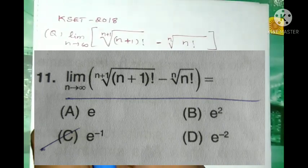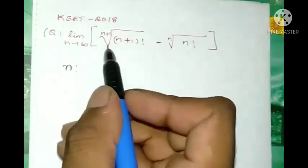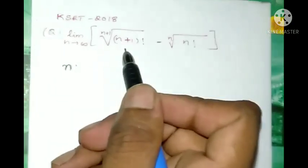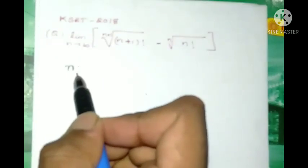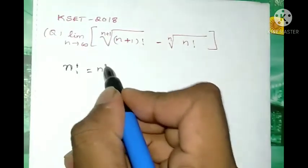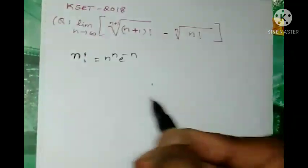The trick is when we see n factorial in a limit problem, we directly substitute this result: n factorial equals n to the power of n times e to the power of minus n.